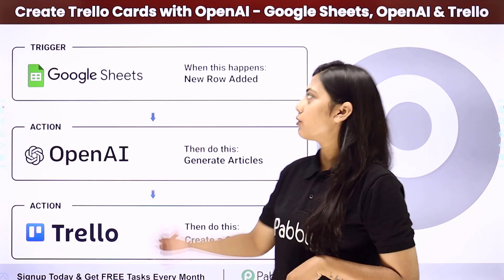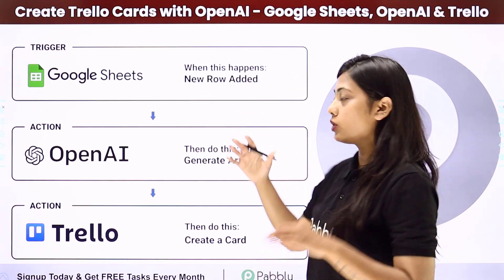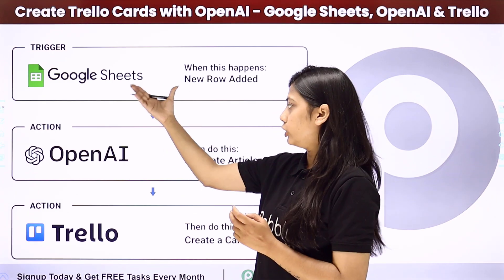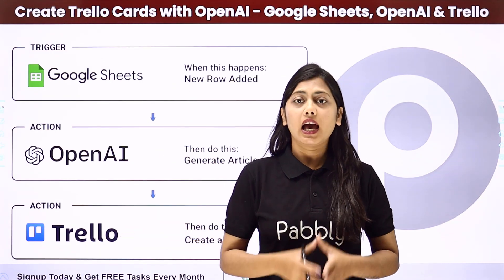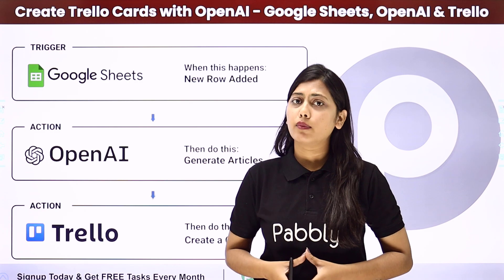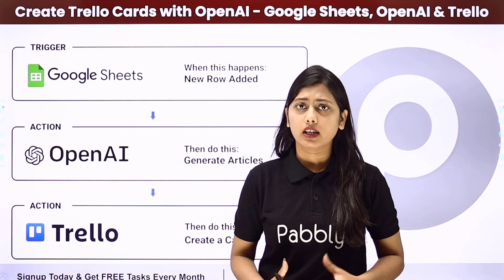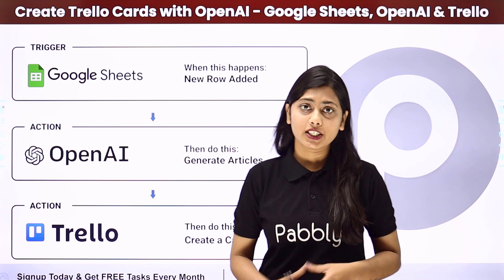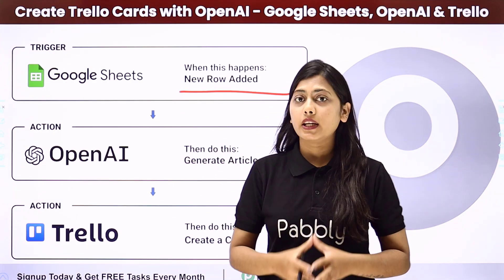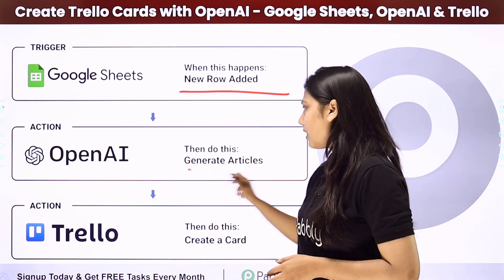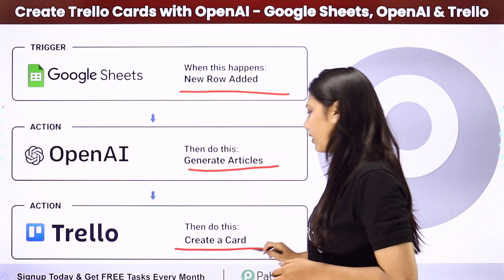Hello everyone, today we will learn how to create Trello cards with OpenAI, which means we are going to integrate Google Sheets, OpenAI, and Trello at the same time. This will be helpful if you want to search for articles every now and then. Just collect your data in Google Sheets as the trigger, use OpenAI to generate articles, and then new cards will be created in your Trello account.